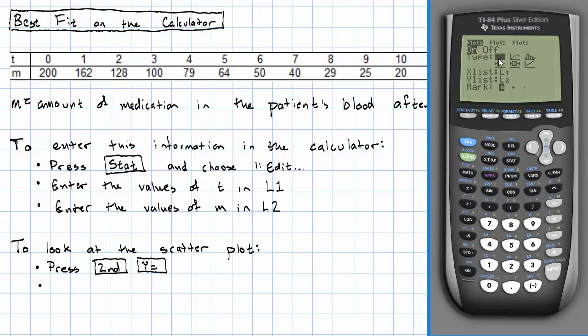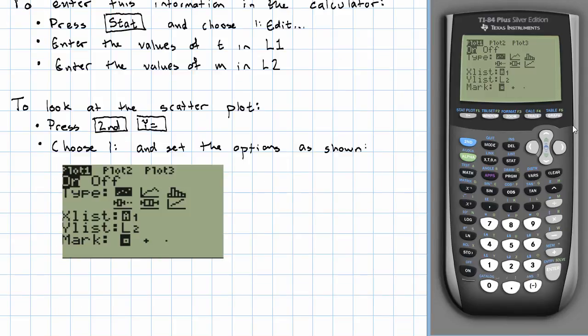By pressing left and right, I'm going to turn it on. For type, I'm going to choose this very first option with all the dots. For X list, I'm going to put L1. This is where I put T. For Y list, I'm going to put L2. This is where I put my M's.